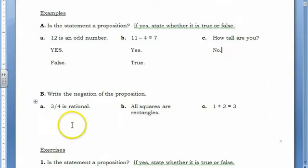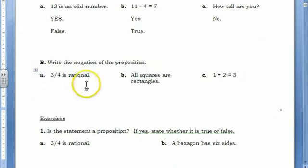And example B is write the negation of the proposition. So, the proposition is 3 fourths is rational. I will say 3 fourths is not rational.